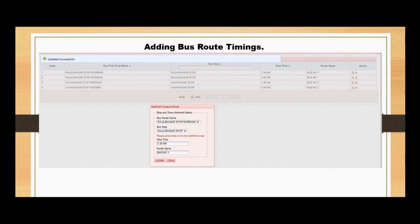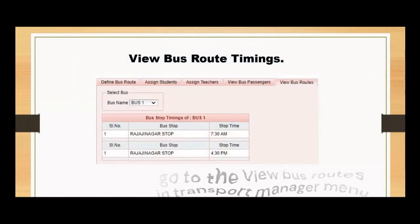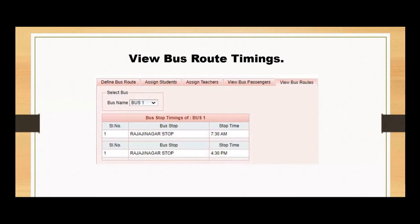Adding bus route timings is a vital step in our quest for a more efficient and human transportation experience. With our user-friendly interface, simply select the bus route name, input the corresponding bus stop name and timings, and click Add. A confirmation message verifies a successful update of bus route timings. By accessing the View Bus Route in the Transportation Manager menu, you can easily view the morning and evening bus stop timings associated with each bus route, empowering administrators and transportation coordinators to plan and manage routes efficiently.